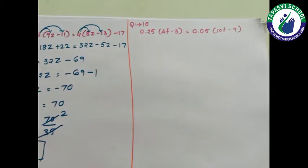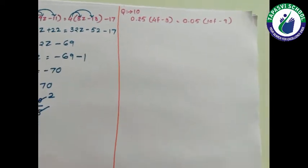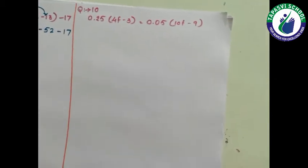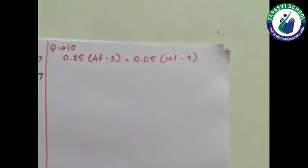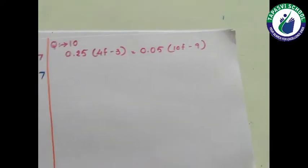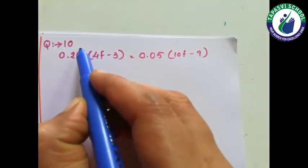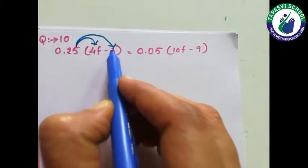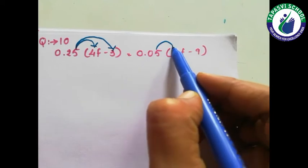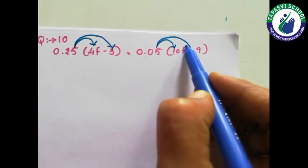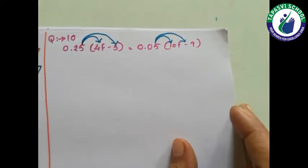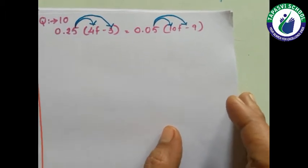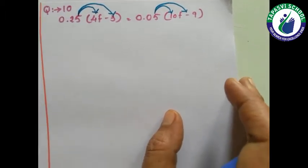Now in question number 10, you have to be more alert compared to other sums because it is given in decimal. Nothing to worry — this is very simple to calculate. Here also we will go with the monomial to binomial multiplication. First of all, the numbers are given in decimal, so to simplify we will convert them into fractions.